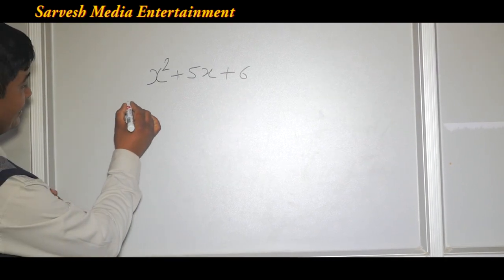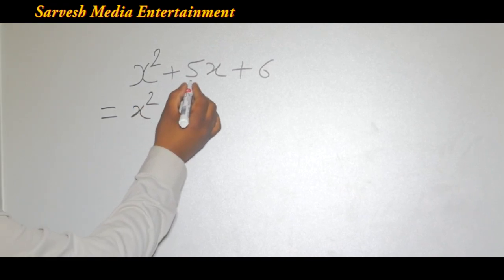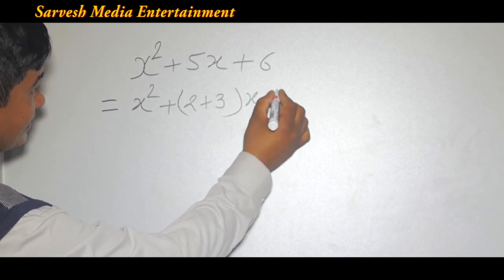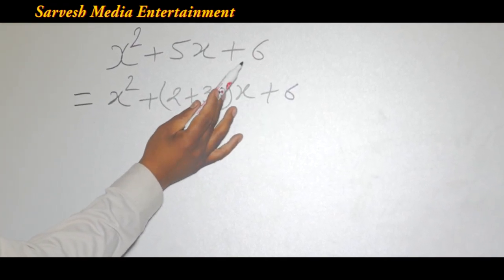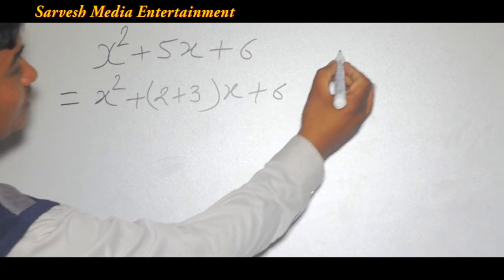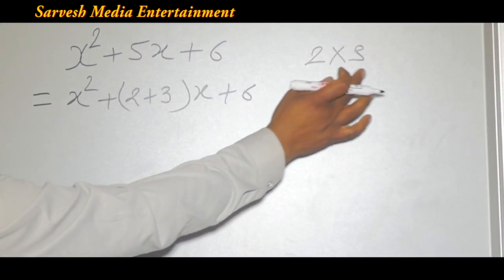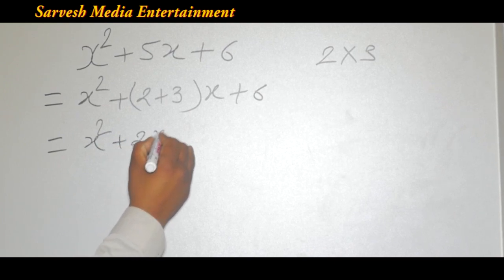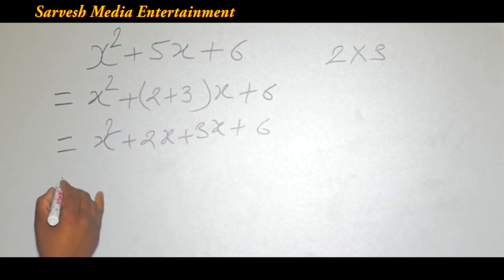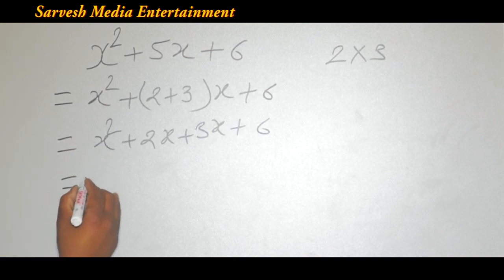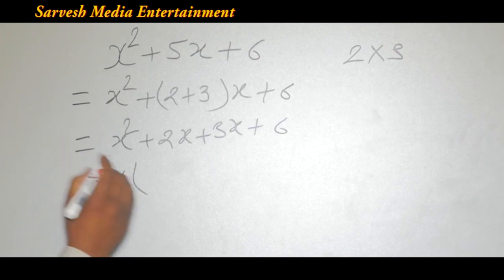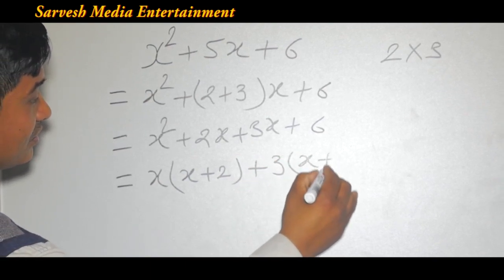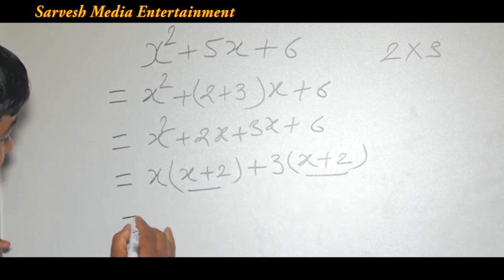x squared plus 5x plus 6. We split the middle term: x squared plus 2x plus 3x plus 6. Now we are taking the common factor — x is common.